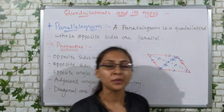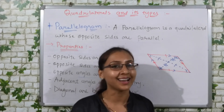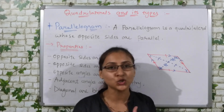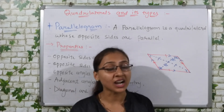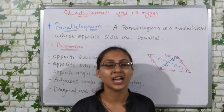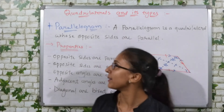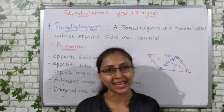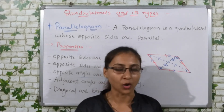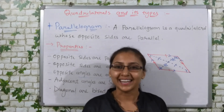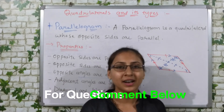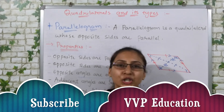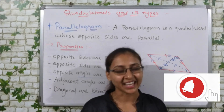In this video, what we have studied is quadrilaterals and its different types. First, we have trapezium — one pair of sides is parallel. Then we have kite — consecutive sides are equal in measurement. Third, we have parallelogram — opposite sides are parallel and equal, and opposite angles are equal. That's it for today's video. If you have any doubt, please let me know in the comments below. If you like this video, hit the like button, share it with your friends, and don't forget to subscribe to VVP Education and press the bell icon for notifications. Thanks for watching, bye bye!